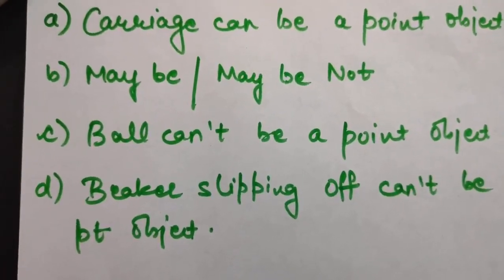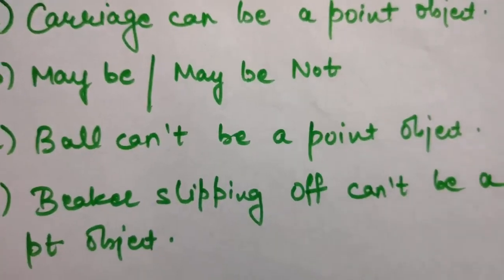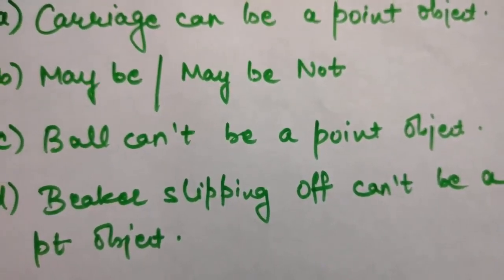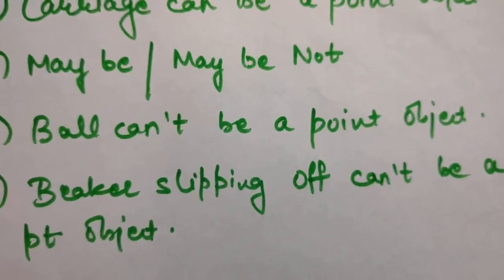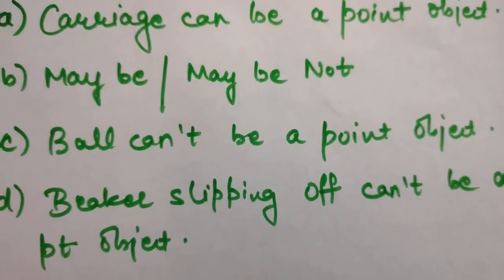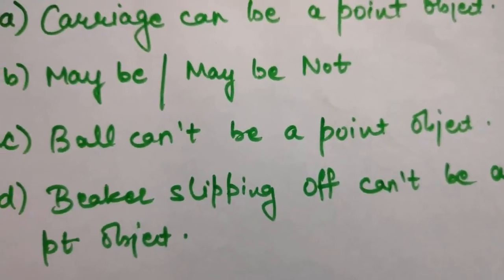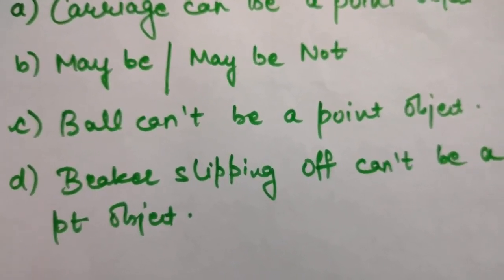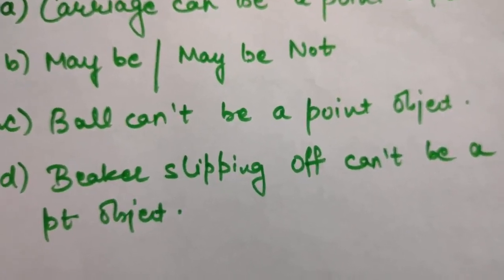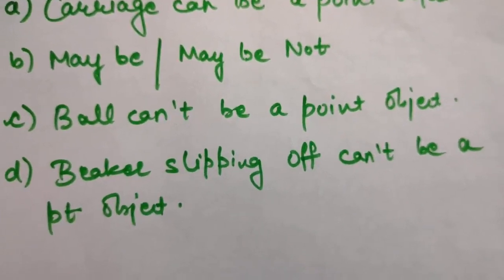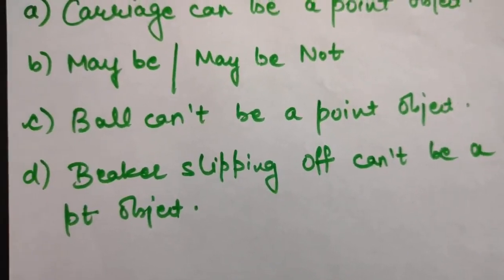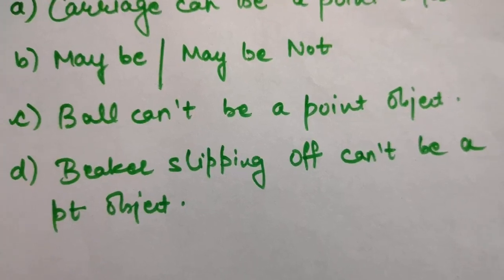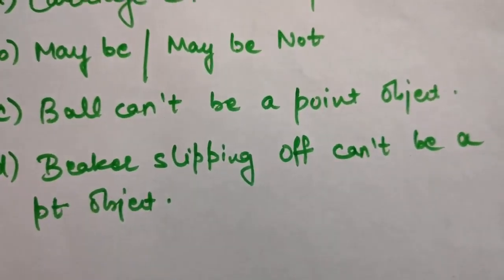Third, a spinning cricket ball that turns sharply on hitting the ground - since the ball does not cover a very large distance, the size of the ball is comparable to the distance covered, so it cannot be considered a point object. Fourth, a tumbling beaker slipping off a table - the distance traveled is also comparable to its size, so it cannot be considered a point object either.